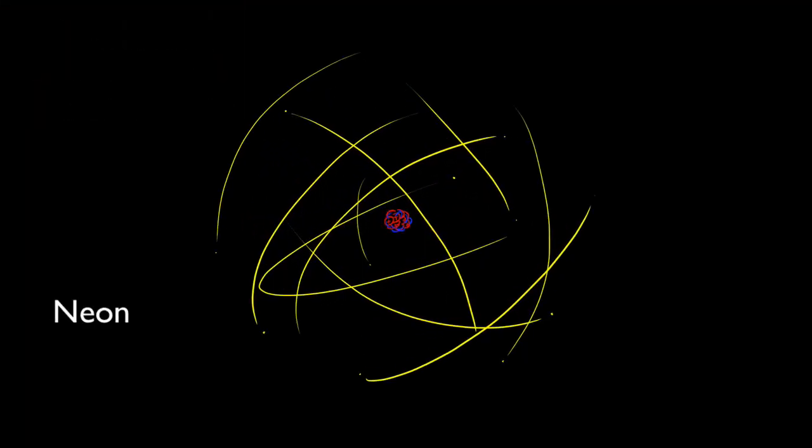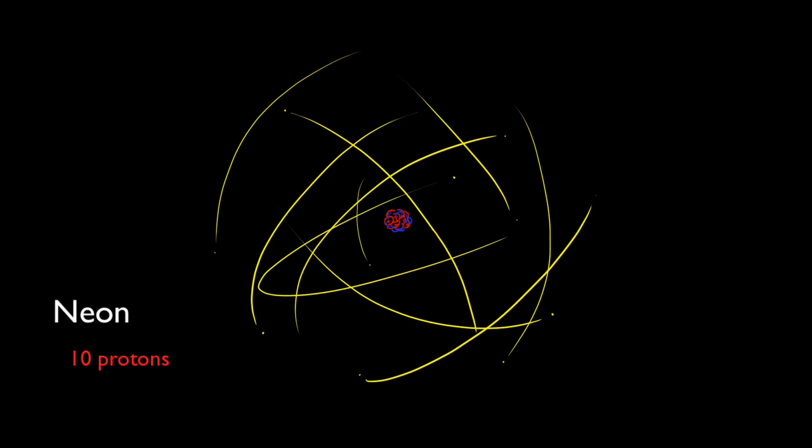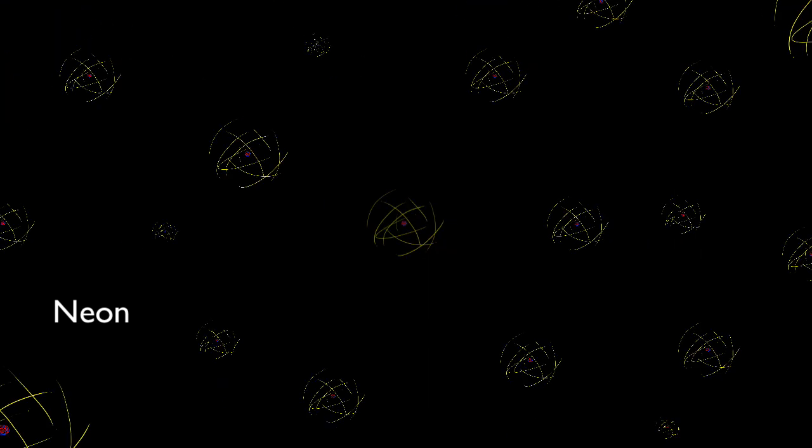Here's a neon atom with its 10 positively charged protons in the nucleus, perfectly balanced by 10 orbiting electrons. Here's a cartoon snapshot of a bunch of neon atoms in the gaseous phase.